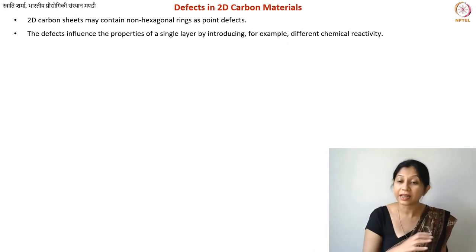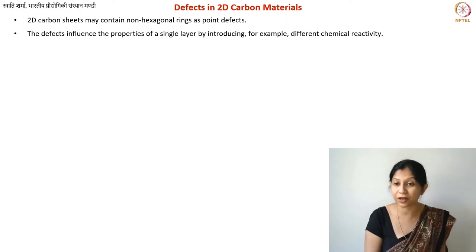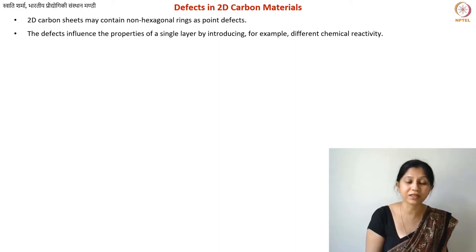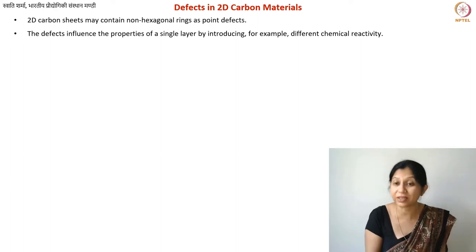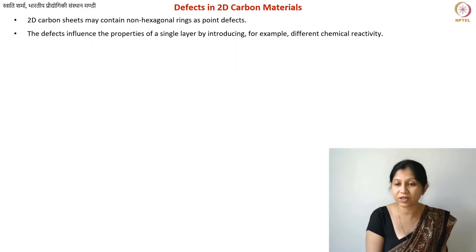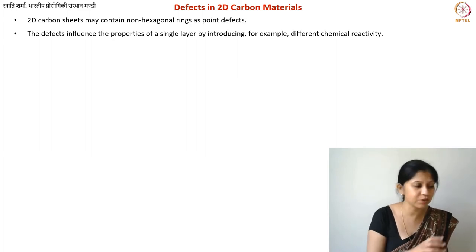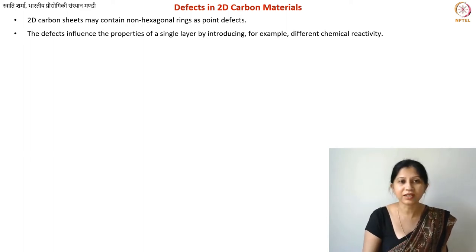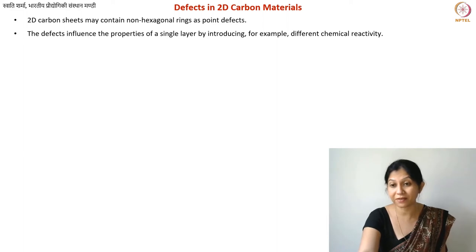Now whether or not you call them graphene, this material in bulk is actually used for a lot of electronic and electrical applications and device fabrication nowadays. So let us discuss what are the possible geometries of these defects. In addition to certain geometries, you will find others as well, but there are certain defects which are more stable than others. One important thing is also that defects definitely influence the properties of your graphene.